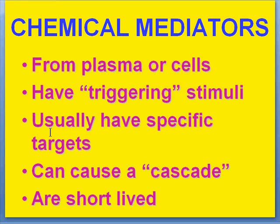So remember: these are the five properties of all chemical mediators, no matter which ones we discuss. They come from plasma or cells. They have triggering stimuli. They have relatively specific targets. They are part of a cascade. And they are short-lived. Thank you very much.